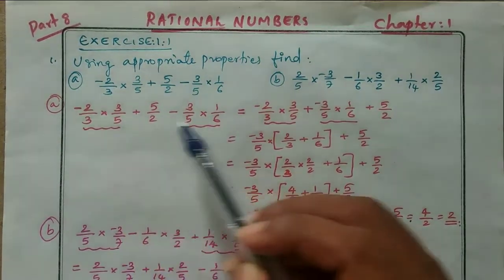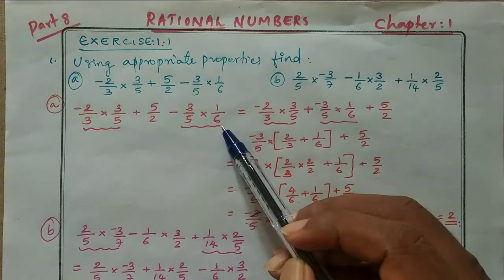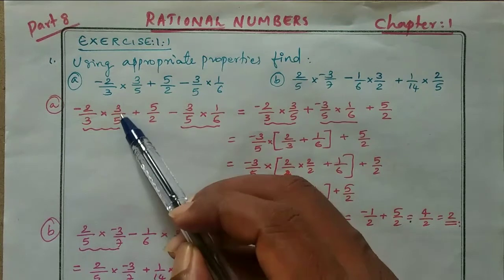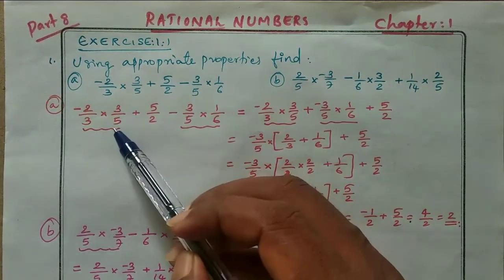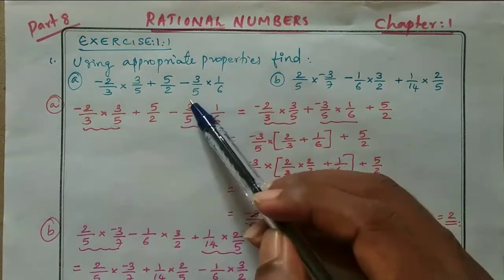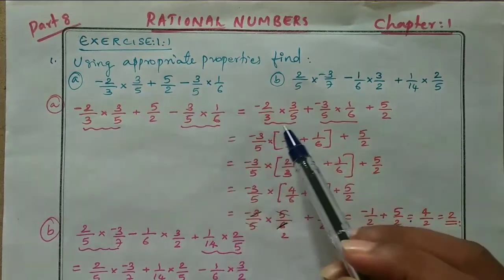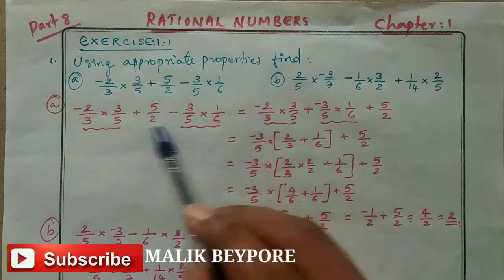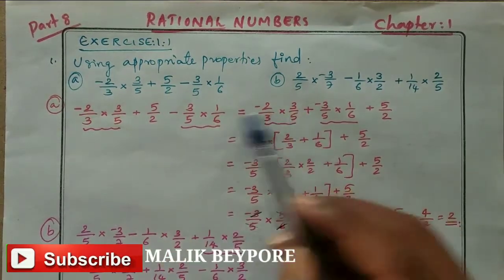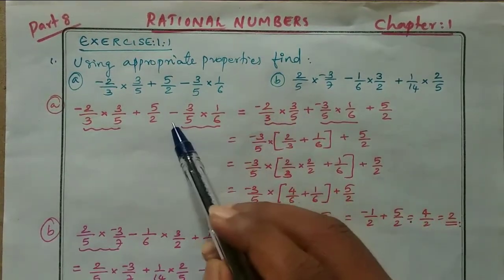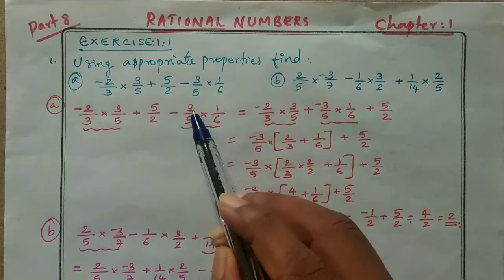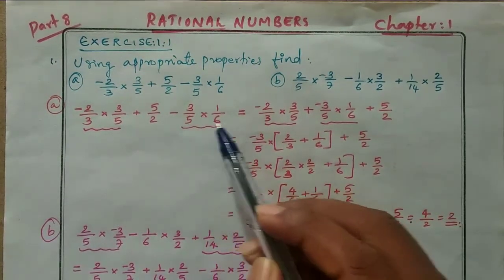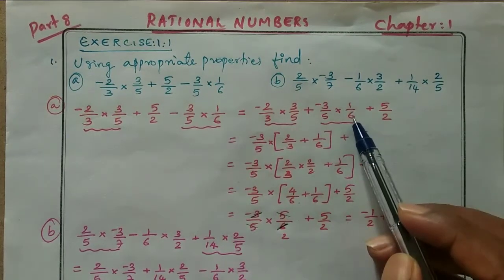We have to start sub question (a): minus 2 by 3 into 3 by 5 plus 5 by 2 minus 3 by 5 into 1 by 6. Take the first two rational numbers and last two rational numbers. We can observe that 3 by 5 is a common rational number in both groups.